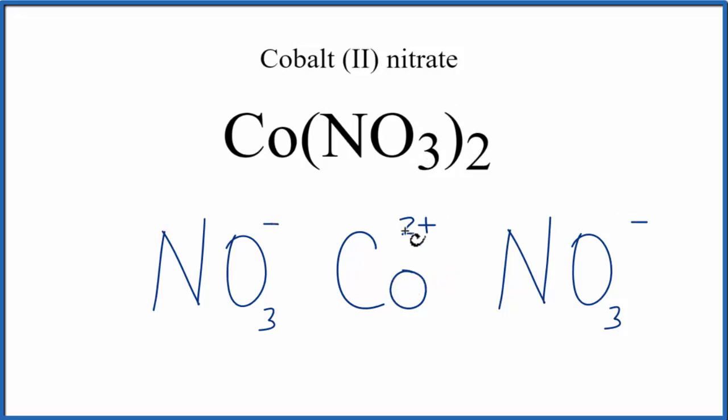This means that the cobalt lost one electron to this nitrate, and because the electrons are negative, we have this negative charge here, and the other one went here. That left the cobalt with a 2-plus charge.